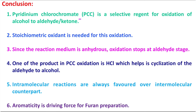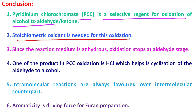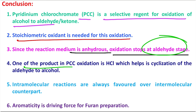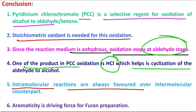In conclusion, what you have learned today: pyridinium chlorochromate (PCC) is a selective reagent for oxidation of alcohol to aldehyde — primary alcohol gives aldehyde, secondary alcohol gives ketone. Stoichiometric use is essential. Since the reaction medium is anhydrous, oxidation stops at the aldehyde stage, because for aldehyde to carboxylic acid oxidation, gemdiol formation is needed, and since the medium is anhydrous there is no water, so gemdiol formation is not possible. One product of PCC oxidation is HCl, which is acidic and helps protonate the carbonyl or aldehyde, ultimately helping in cyclization.